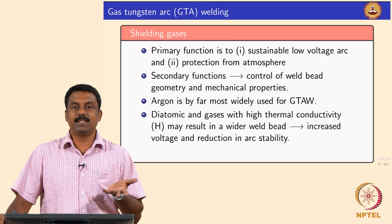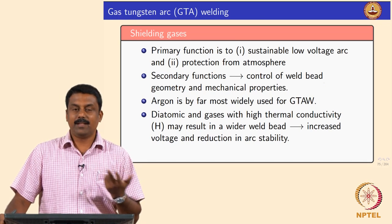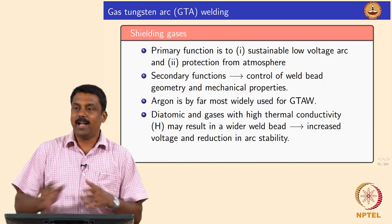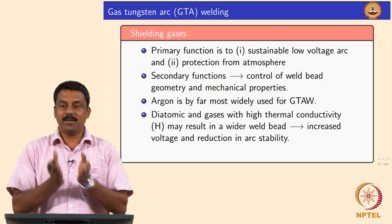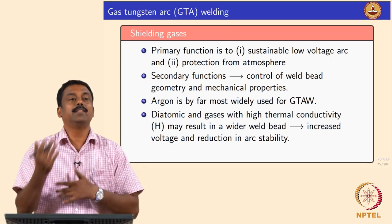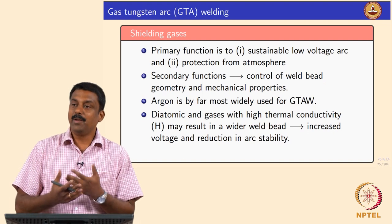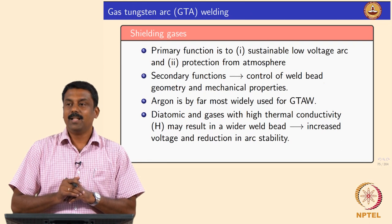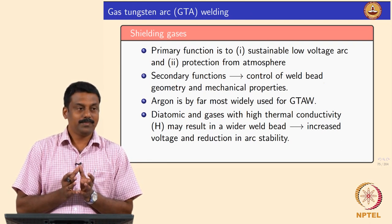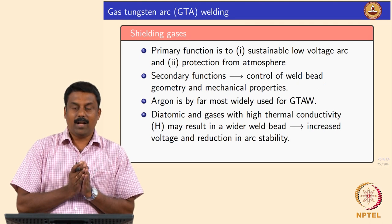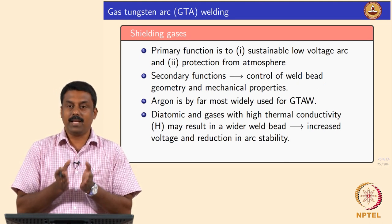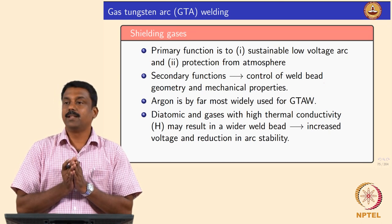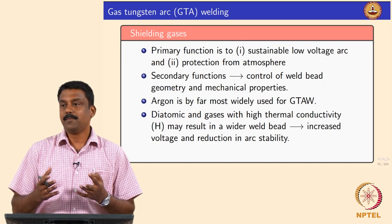The function of gas in the arc welding process: the primary function is to strike an arc. So the shielding gas you use — the main function is to strike an arc and then you use the gas to protect the weld pool. The shielding gas is not only used for the arc; arc is the primary function, but secondary function — it is not only to protect the weld pool. The shielding gas influences various aspects of welding.